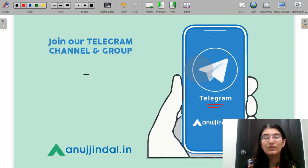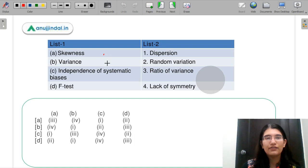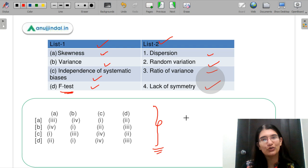Also guys, do join our Telegram group. Here we conduct a daily quiz. And this daily quiz is going to be very beneficial for you guys because here you will be ready for the exam by understanding a lot of quizzes. So let us start with our first question. This is a match the following kind of question. Part A says skewness, B part here is variance, C part is independence of systematic biases, D part says F test. List 2 here is dispersion, random variation, ratio of variance, and lack of symmetry. And these are your options. So do let me know in the chat box what do you think is the correct answer.